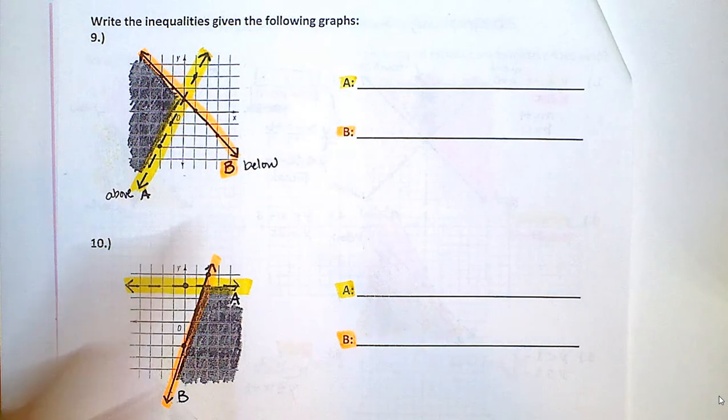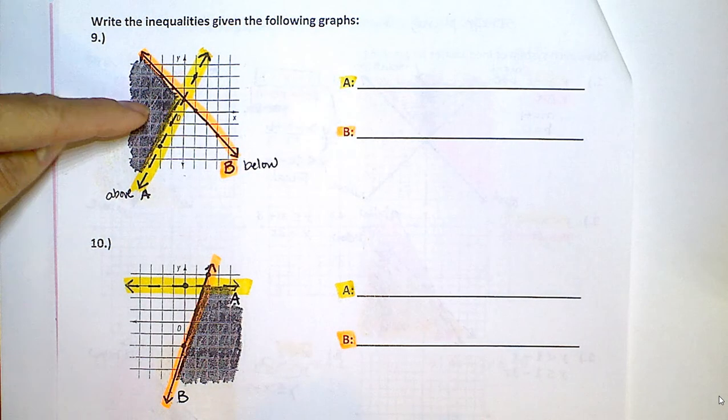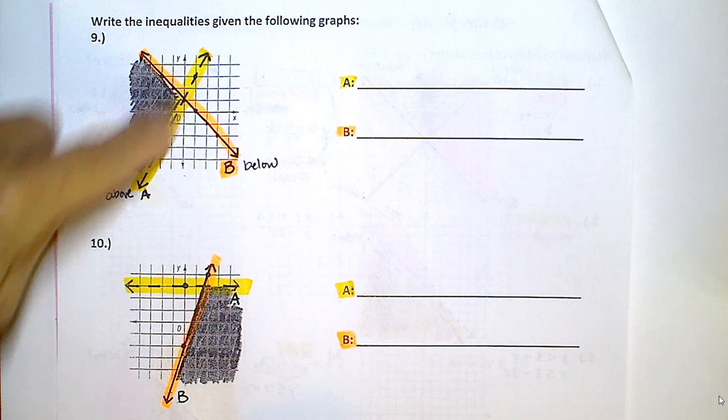So you have to keep a couple things in mind. Are we shading above or below? Is this dashed or is it solid?